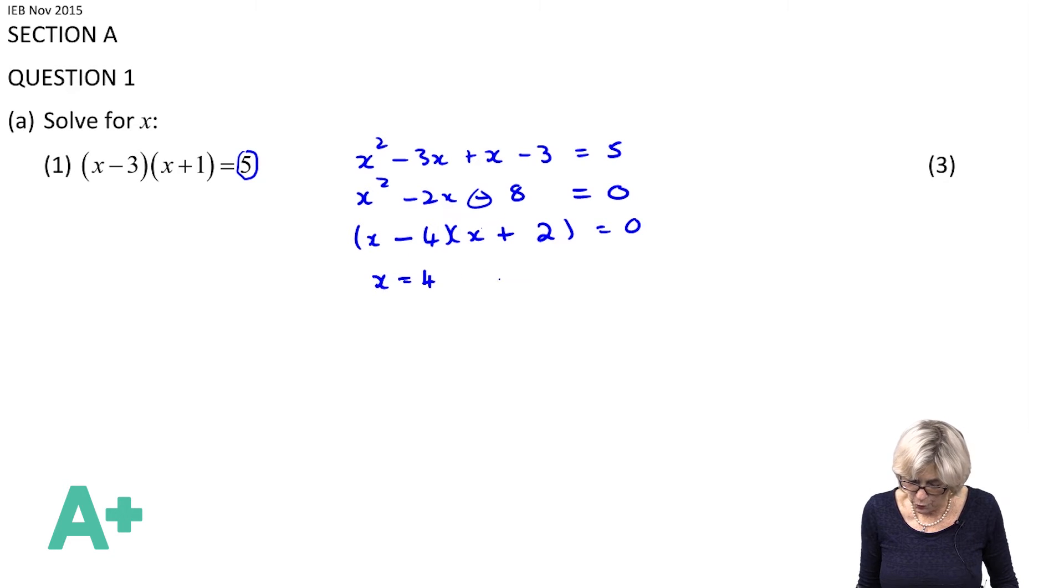So therefore x is equal to 4, or x is equal to -2. And the sort of question I would ask myself: do I need to check? No. So those are my solutions. There are two solutions, and there's my three marks.